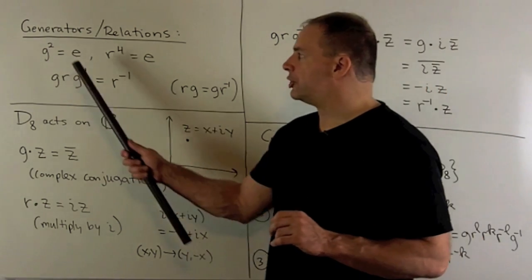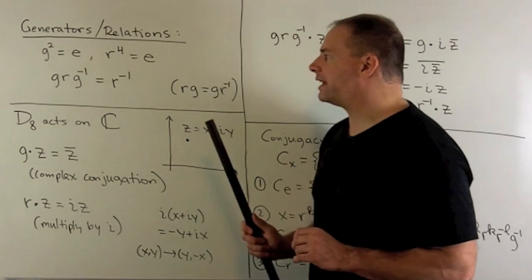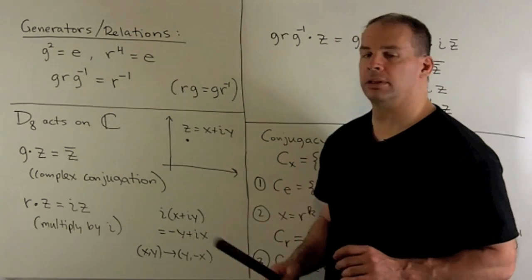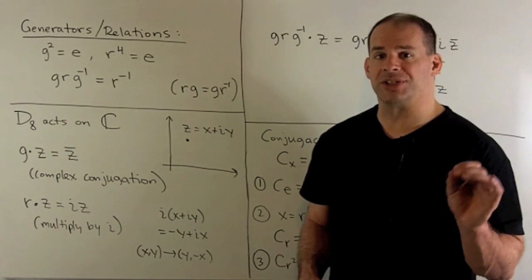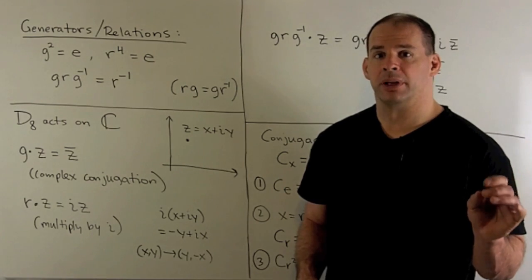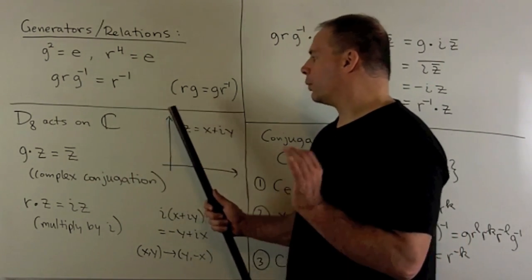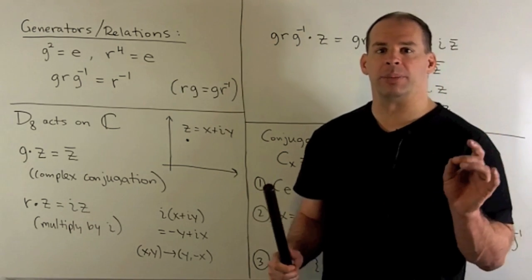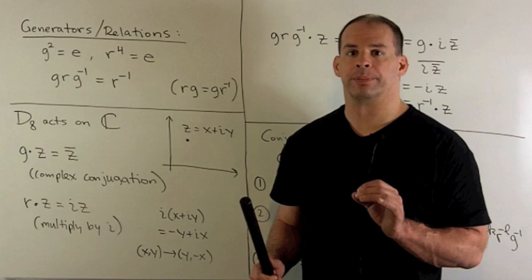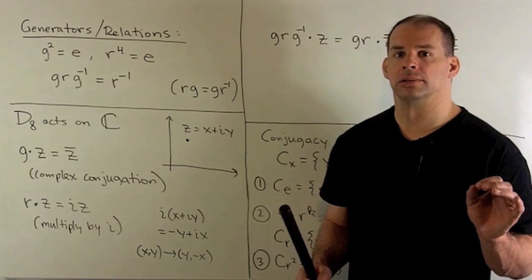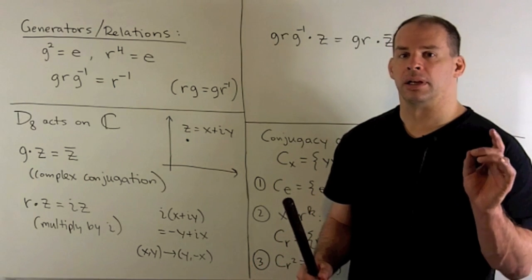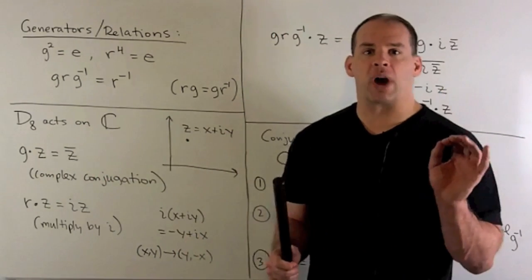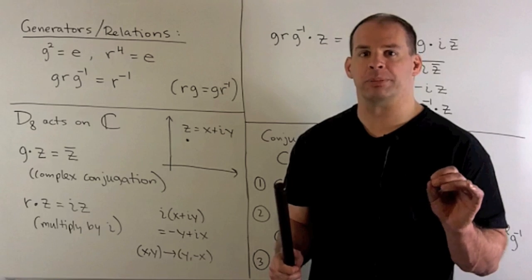We'll have G squared as the identity, R to the fourth as the identity, and then if I take R conjugated by G, out comes R inverse. Since G squared is the identity, G is equal to G inverse. So what our relation here says: if I want to take R times G and move G to the other side, the penalty is going to be that you have to switch the R to an R inverse. That'll work for any power of R. Now how should we think of this relation? Well, you could just grind it out in permutation notation, and it'll turn out to be true.